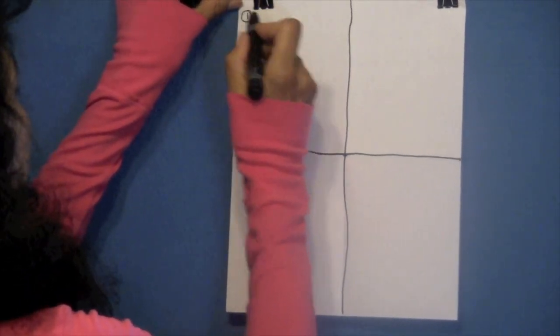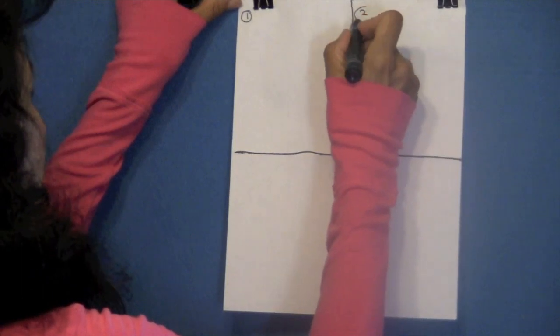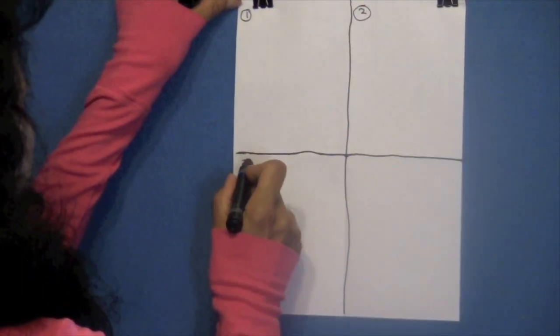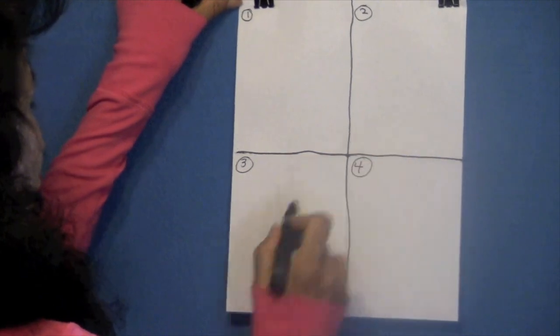Now, I want you to number each box. Here's box number one, box number two, box number three, and box number four.